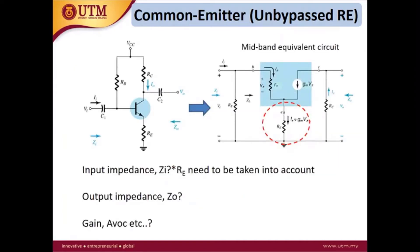When we draw the mid-band equivalent circuit, the difference between the bypassed and unbypassed case is that here there is RE connected to the emitter. If we have the bypass capacitor, RE disappears because most current flows through the capacitor, so there is no significant voltage drop at RE.